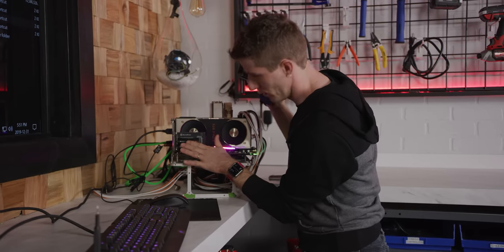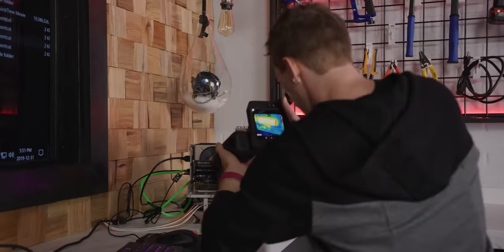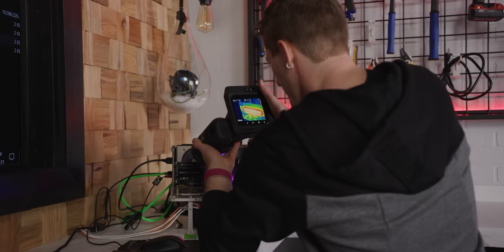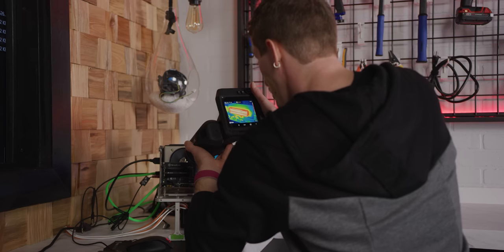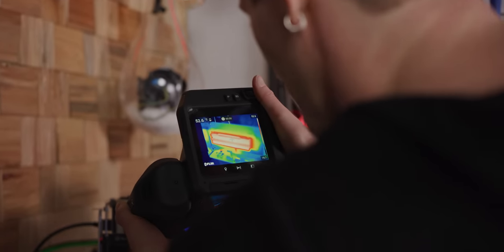Now, this is metal, which can have emissivity issues, but it's black and it's matte, so I'm hoping that it's not going to be too bad, and it looks like we are anywhere in the neighborhood of around 50 to 52 degrees on our heatsink here. But this test is just getting started right now.